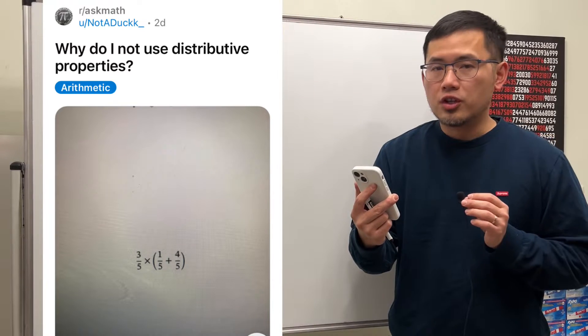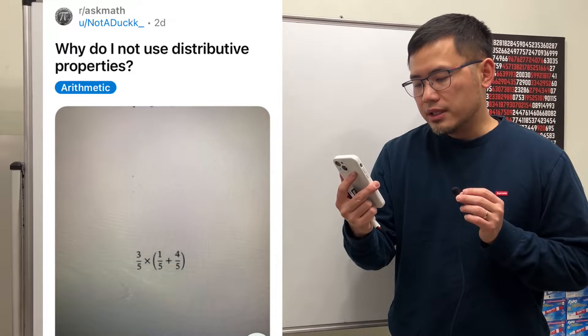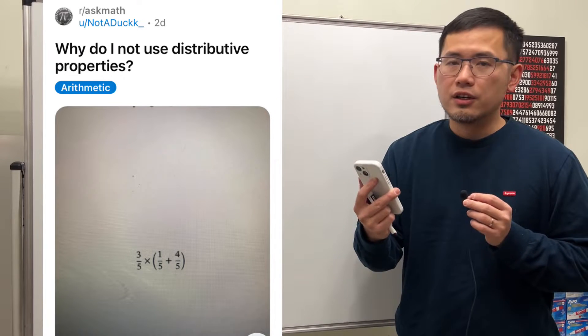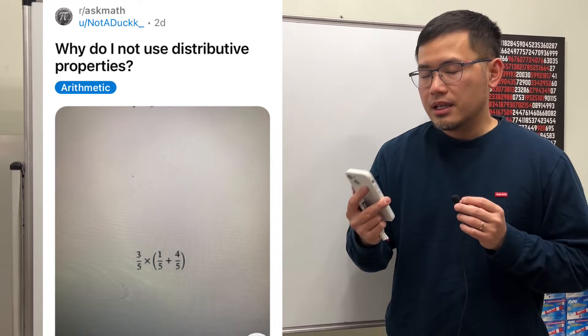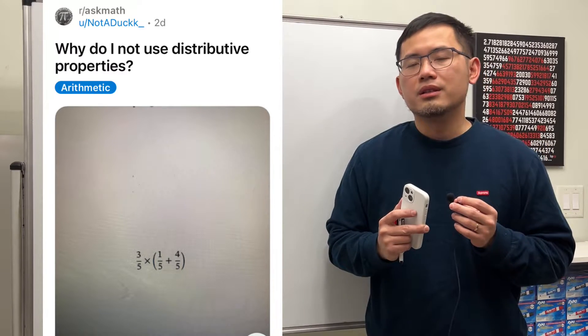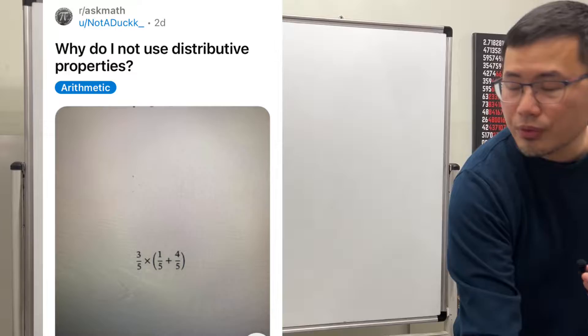Why do I not use distributive property? The question is 3 over 5 times the parentheses with 1 over 5 plus 4 over 5 inside. The answer to your question is that, in fact, we can actually use the distributive property. Let me show you.